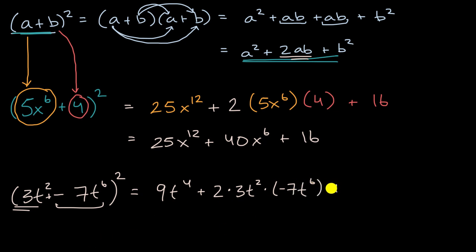And then last but not least, we're going to square negative 7t to the sixth. So that's going to be negative 7 squared is positive 49. And t to the sixth squared is t to the twelfth.